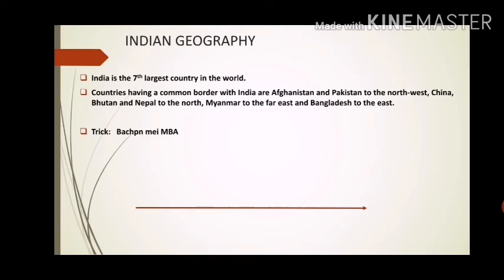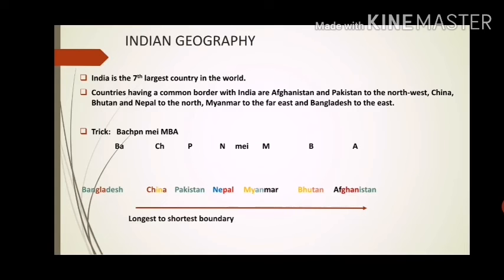India is the seventh largest country in the world. Countries sharing a common border with India are Afghanistan and Pakistan to the northwest, China, Bhutan, and Nepal to the north, Myanmar to the far east, and Bangladesh to the east. To remember the order of longest shared borders, use the trick 'Bachpan mein MBA' — B for Bangladesh, Ch for China, P for Pakistan, N for Nepal, M for Myanmar, B for Bhutan, A for Afghanistan — in decreasing order of boundary length.